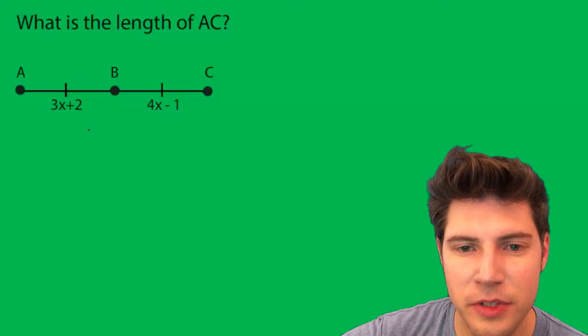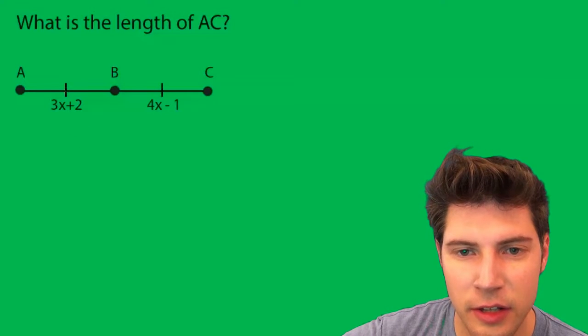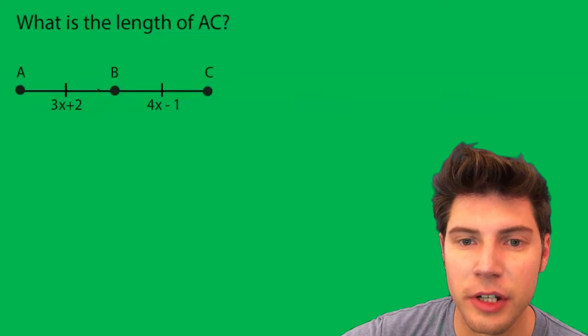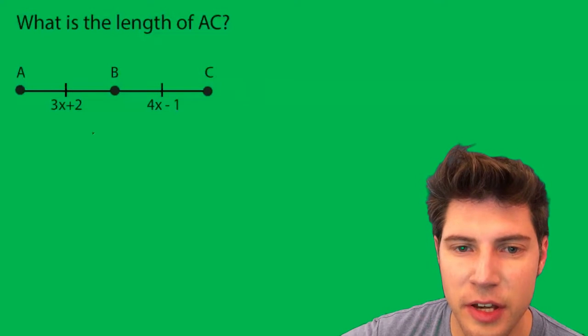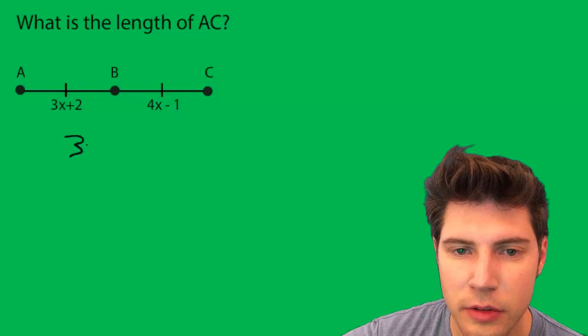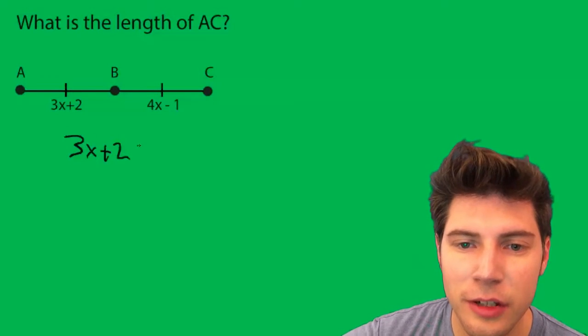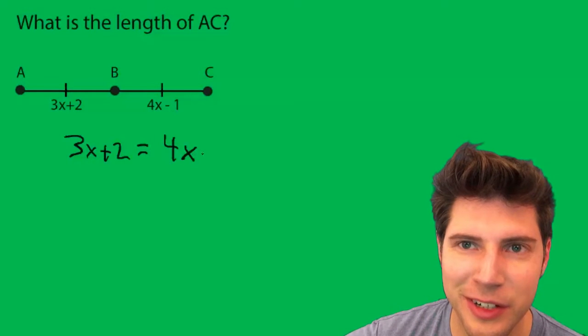So the trick with these types of problems is since this line is right here, that means that these two are equal to each other. So we're going to say 3x plus 2 equals 4x minus 1.